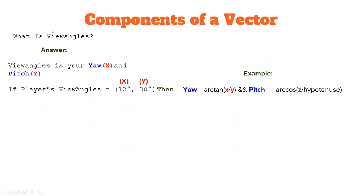Components of a vector. What is view angles? View angles is your yaw and pitch. Yaw, which is your x, and pitch, which is your y. Therefore, if your player's view angle is equal to 12 degrees x and 30 degrees y...